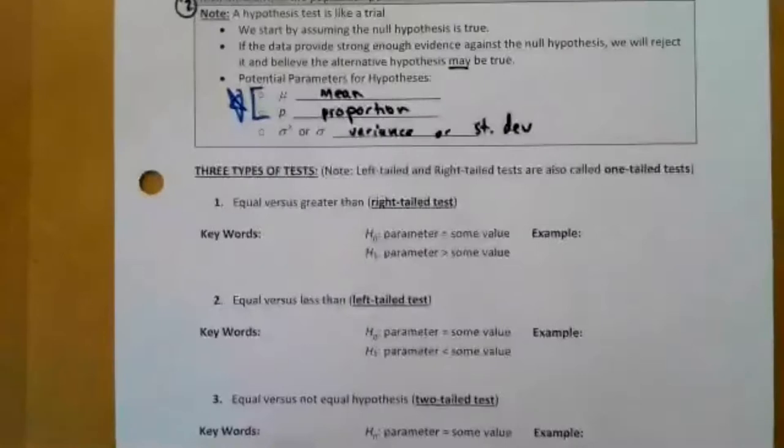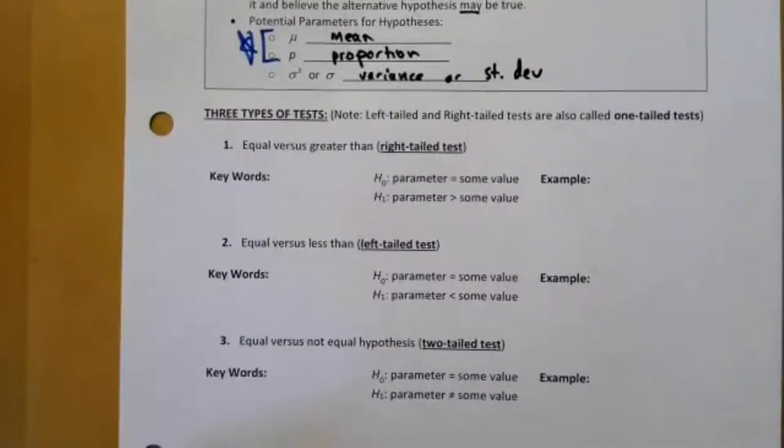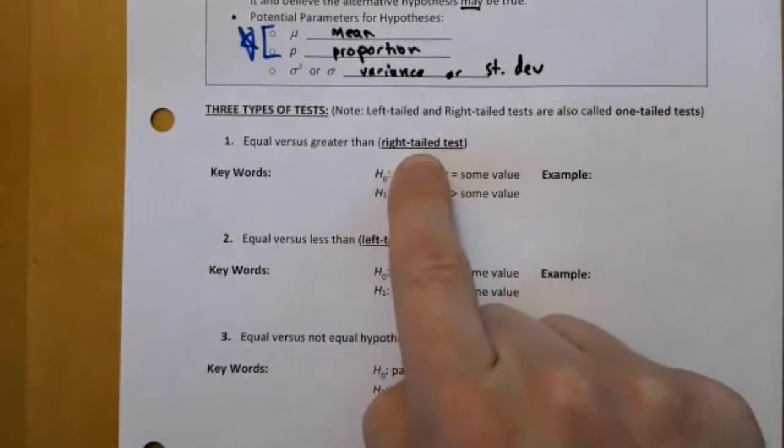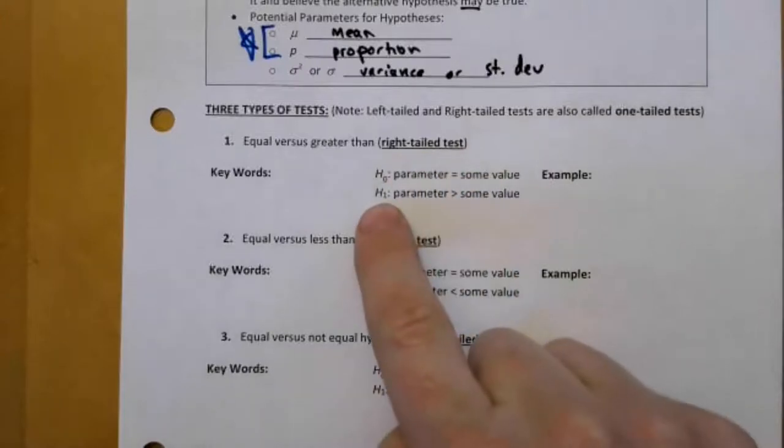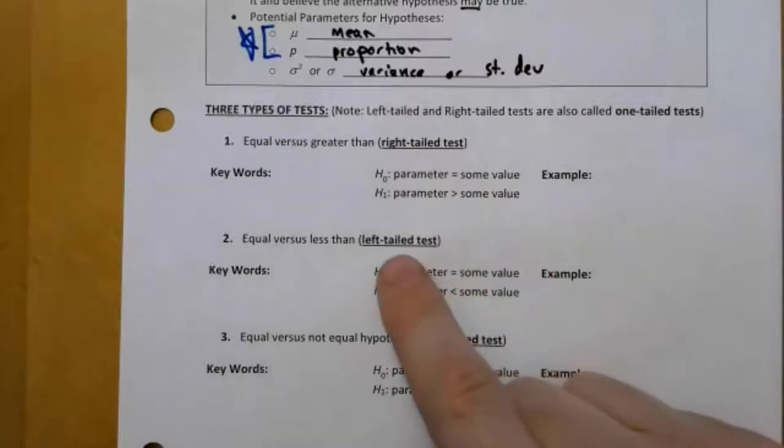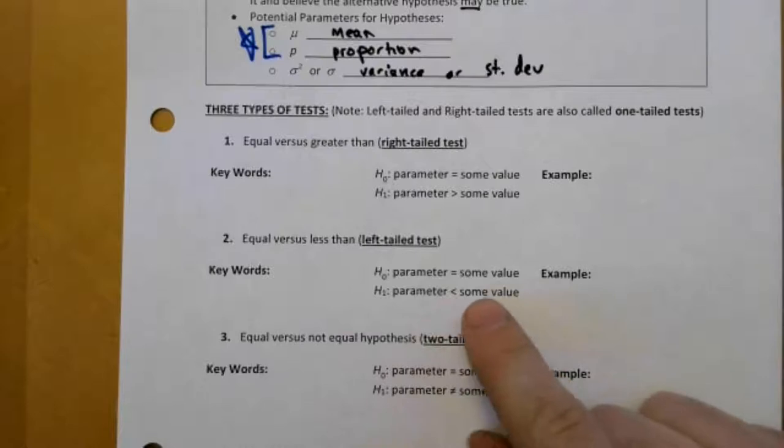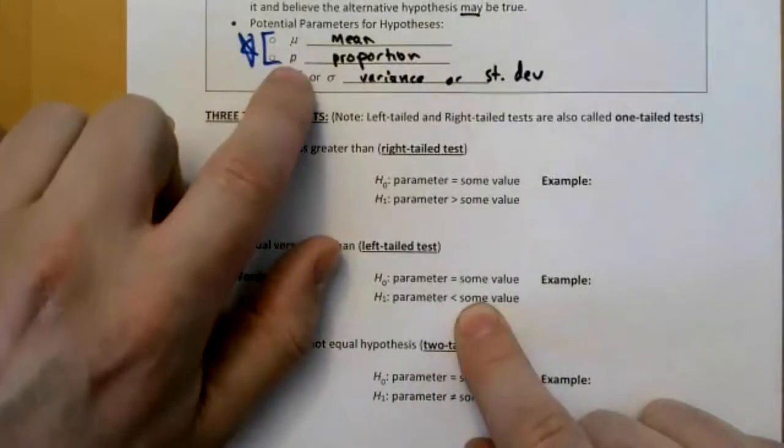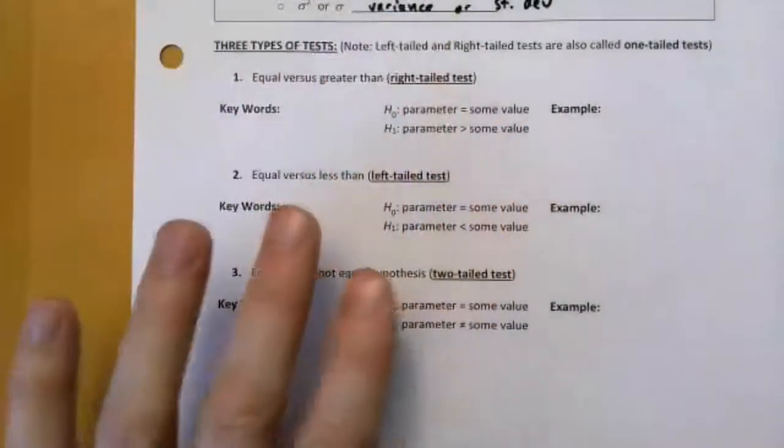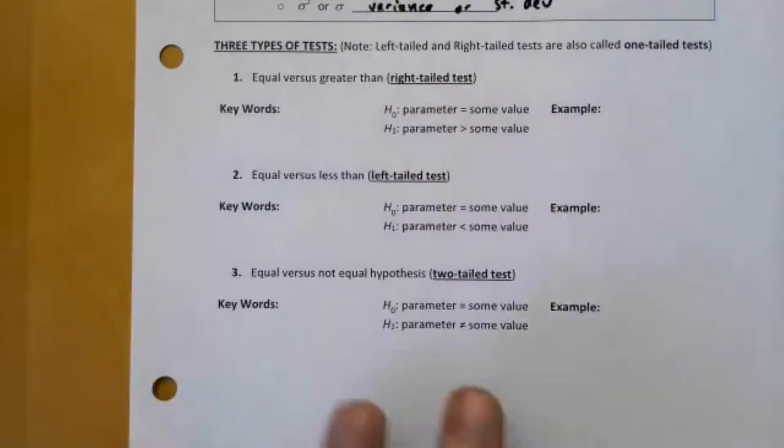There are two types of tests. We could do one-tailed tests or two-tailed tests. There are two types of one-tailed tests. There's a right-tailed test. It's a right-tailed test if our alternative hypothesis claims that the parameter is larger than a particular value. It's a left-tailed test if we claim that our parameter is less than some number. Remember, when we say parameter, it's either going to be a mean or a proportion. And then a two-tailed test is when we say the parameter is just not equal to some number.